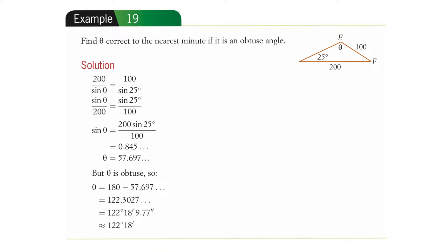They started with the longer form, but just start with sine A over A equals sine B over B — so it's sine of theta divided by 200 equals sine of 25 divided by 100. That resolves down to sine of theta equals that expression. Use the calculator with sine to the minus 1 — don't go to a decimal first — and you'll get 57.697 degrees. Make sure your calculator is in degrees.